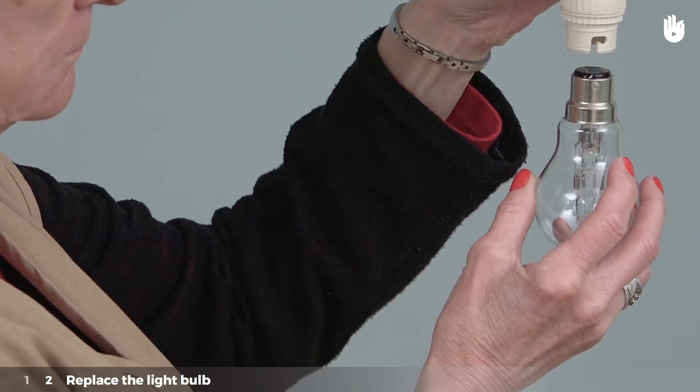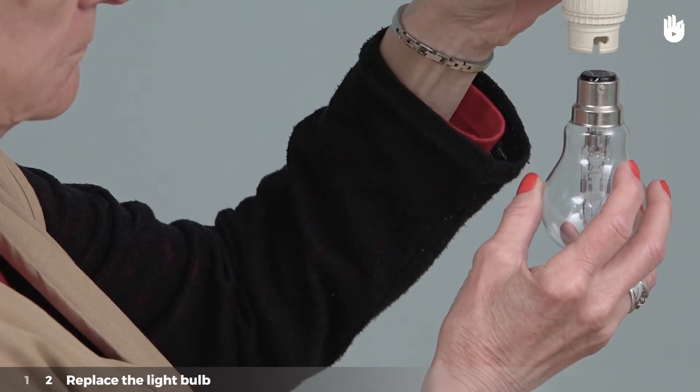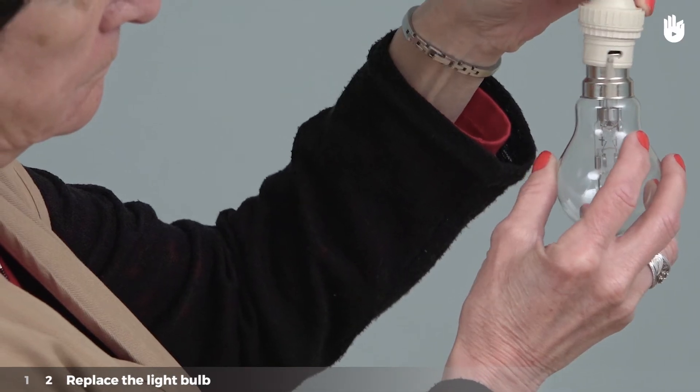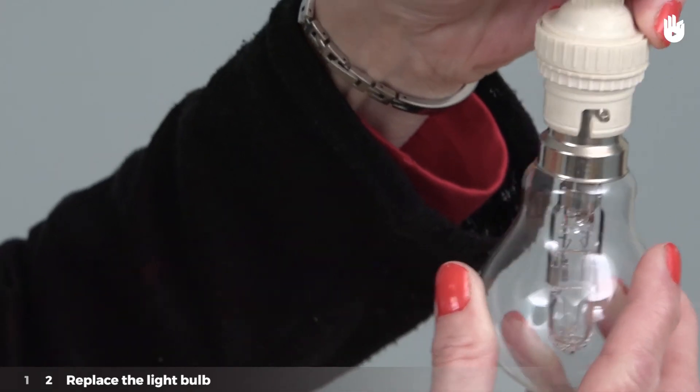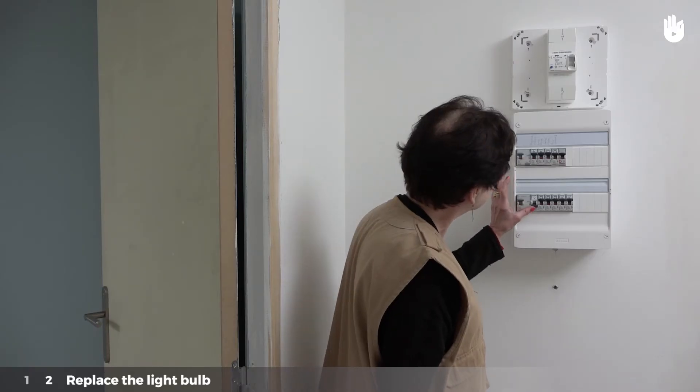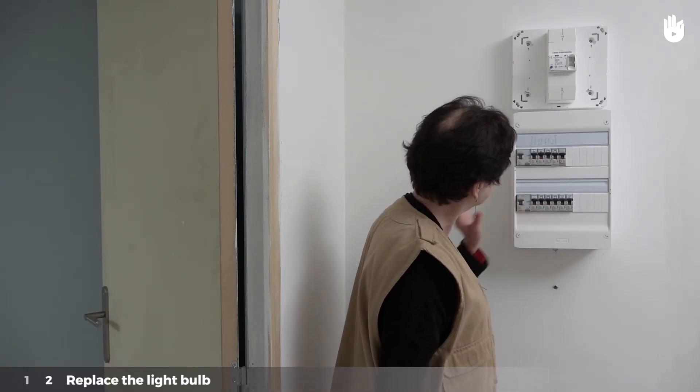If it is a bayonet base type light bulb, position the metal tip inserts into the slots of the base fixture, push in gently and then lock the base of the light bulb and turn one quarter turn clockwise. Turn the current for the circuit concerned back on.